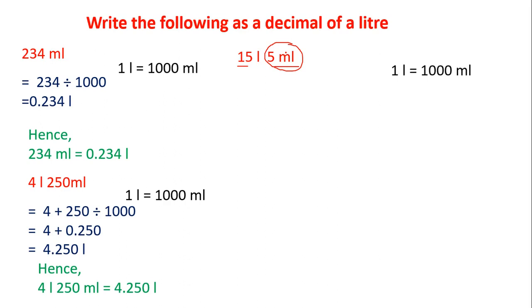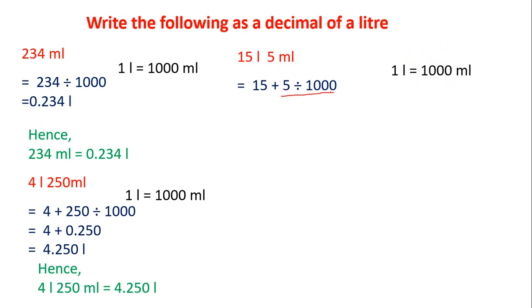We know that 1 liter is equal to 1000 milliliter, so we are converting lower units to higher unit. We have to divide this 5 milliliter by 1000. I am writing 15 as it is because it is already in liters. Then, dividing 5 by 1000 means we have to make a 3 decimal places number. Since 5 is only 1 digit, there are no other digits, so I will write 0 and 0.